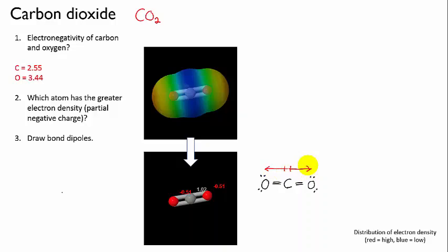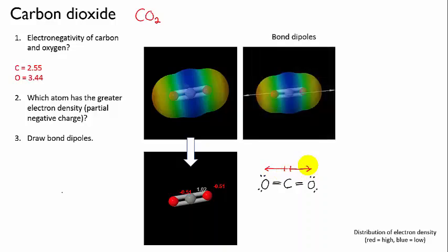And then we sum the bond dipoles to draw the molecular dipole. Now, if we have two dipoles that are of equal magnitude but in exactly opposite directions, what is their sum going to be? It's going to be zero, isn't it?